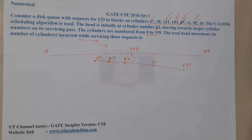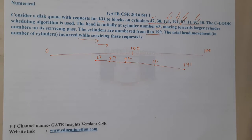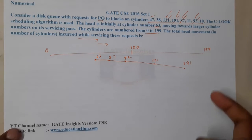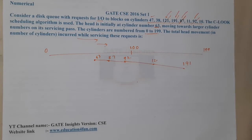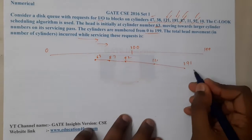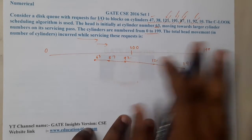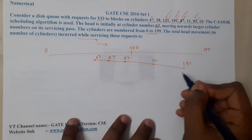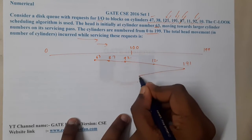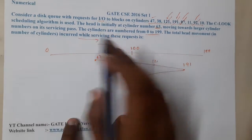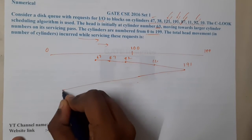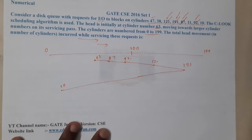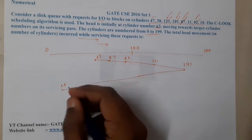We are using the C-LOOK algorithm. C-LOOK does not go all the way to the end — it looks forward and if there is nothing to serve, it moves back. It will not move back to 0; it moves back to the least pending value, which is 10. So it stops at cylinder 10.